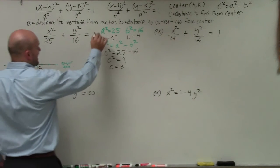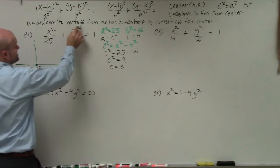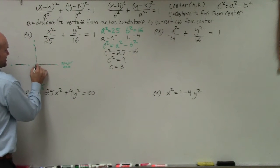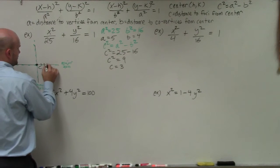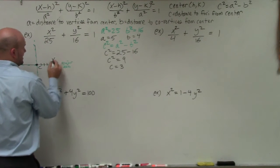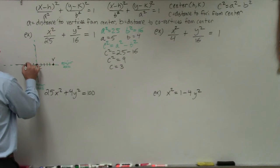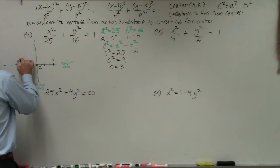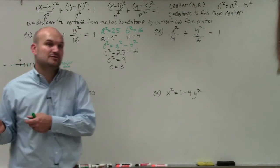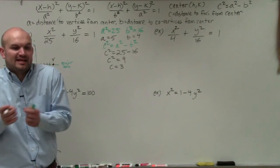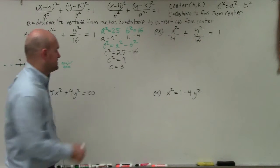A equals 5, which is the distance from the center to each vertex. So one vertex is 5 units to the right and the other is 5 units to the left. A represents a distance, so it's never negative — it just goes in both the positive and negative directions along the major axis.